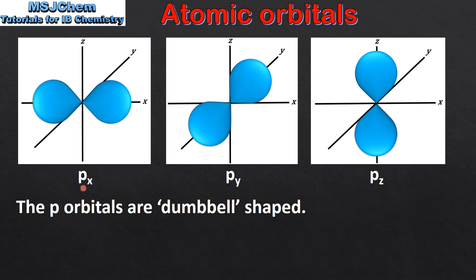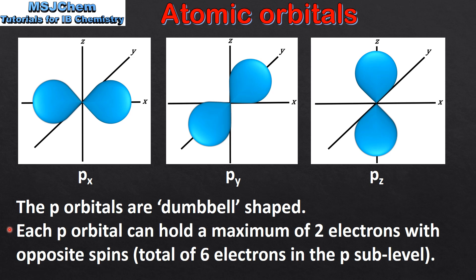The x, y, and z refer to their orientation in space. Each P-orbital can hold a maximum of two electrons with opposite spins,